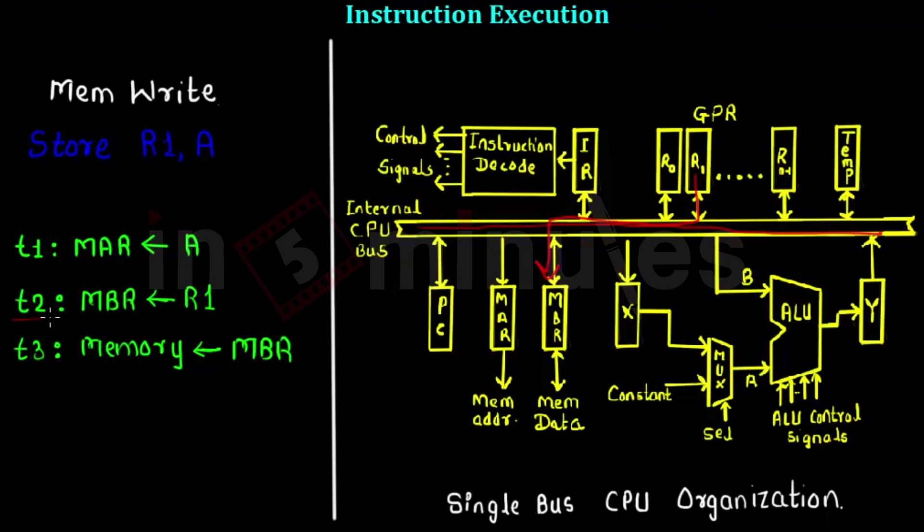Here, the operations of cycle T2 and T3 are basically independent of the internal CPU bus. The first one uses the CPU bus to store the data from R1 to MBR. However, T3 operation is actually concerned with communication with external memory, so it does not use internal CPU bus.